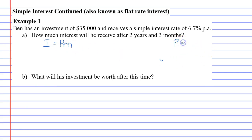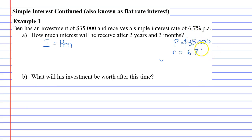Our principal is the amount you borrow or the amount you invest, so in this case he's invested 35 grand. Our interest rate is 6.7%, but we've always got to divide this by 100. What that does is convert it from a percentage to a decimal, which gives you 0.067. Notice that we basically have the same digits — the 6 and the 7 — but we just move it further away from the decimal point.